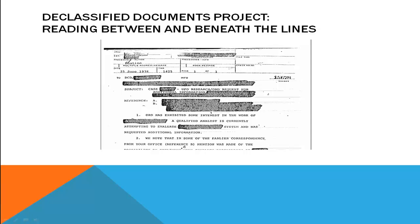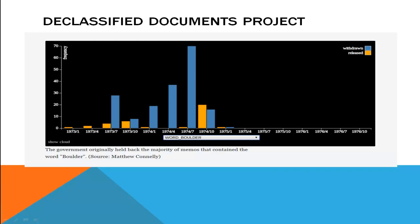That project, by surveying the broad body of documents — particularly once materials have become declassified — seeks to map patterns within the material overall, as shown in a graph displaying the number of memos containing the word 'Boulder,' the name of a top-secret intelligence initiative that were withheld from the public in the early 1970s. By comparing redacted and unredacted versions of documents when they become available, the engine can begin to learn patterns underlying the blacking out of text, to the extent that it can actually make intelligent guesses about what may lie behind the dark lines.